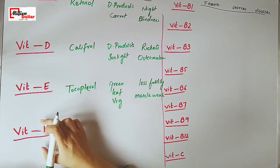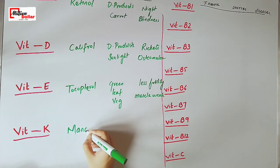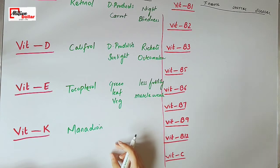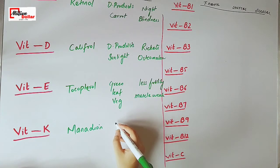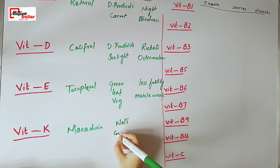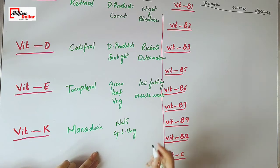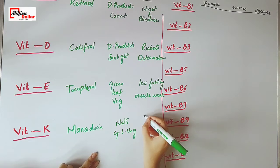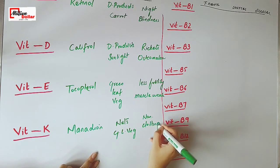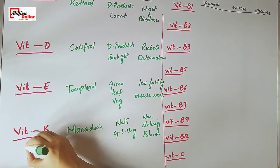The technical name of vitamin K is menadione. The sources of vitamin K are nuts and green leaf vegetables. Non-clotting of blood is caused by the deficiency of vitamin K.